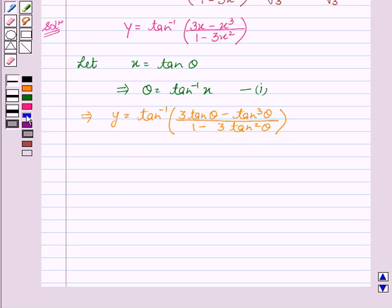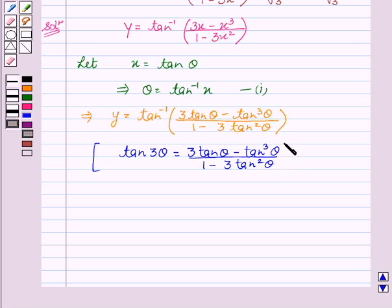Since we all know that tan 3 theta is equal to 3 tan theta minus tan cube theta upon 1 minus 3 tan squared theta, therefore y equal to tan inverse tan 3 theta.